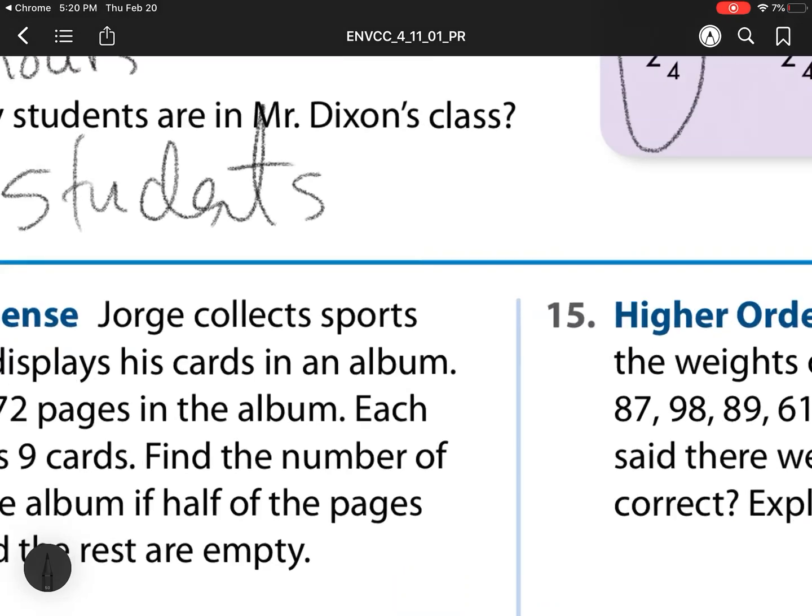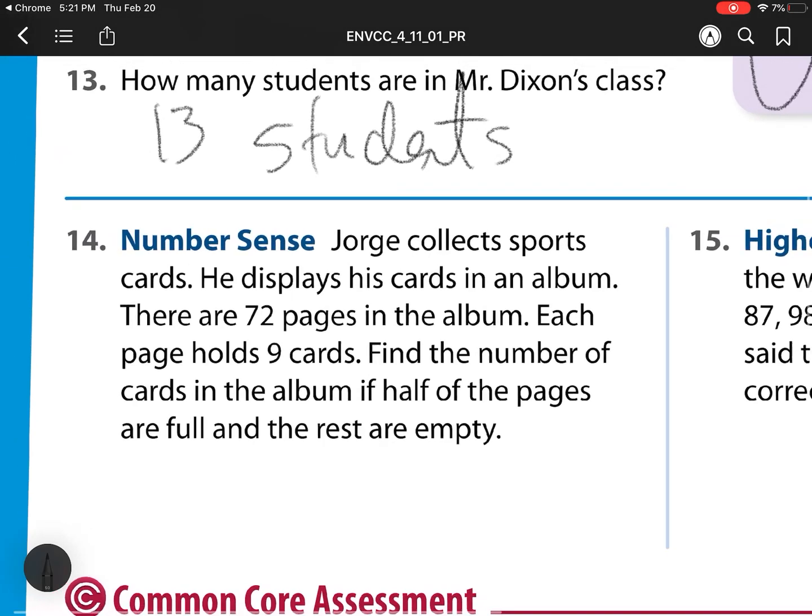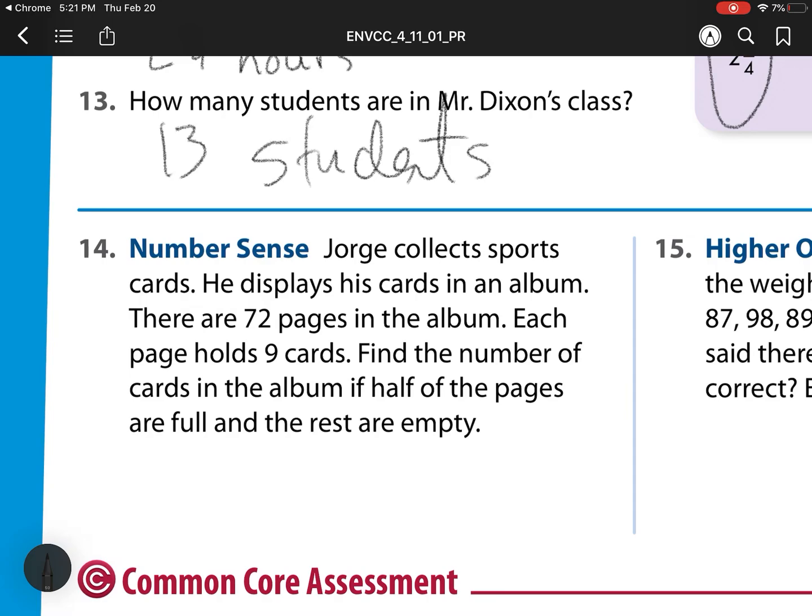My next one is our number sense number 14. Jorge collects sports cards. He displays his cards in an album. There are 72 pages in the album. Each page holds 9 cards. Then it says, find the number of cards in the album. Half of the pages are full. The rest are empty. Well, first, let's see how many cards or how many pages we have. So we have 72 divided by 9, which is 8. So that means what? That means we have 8 pages that have cards.